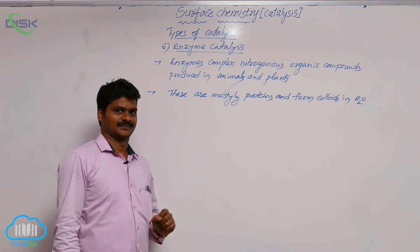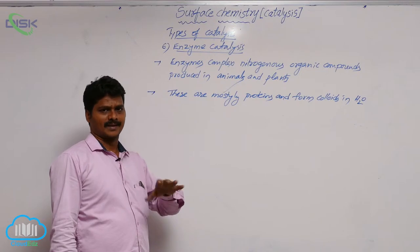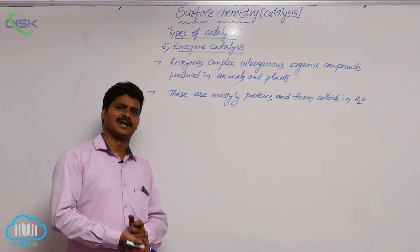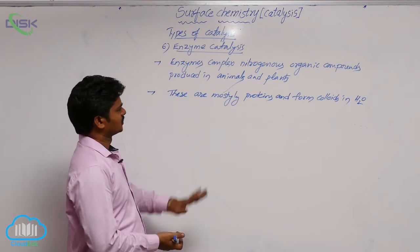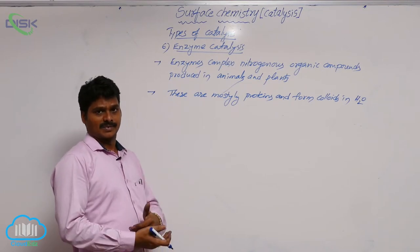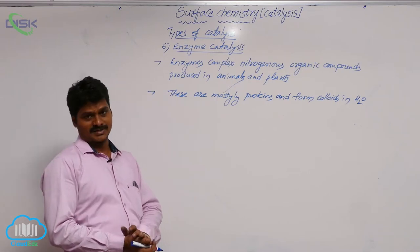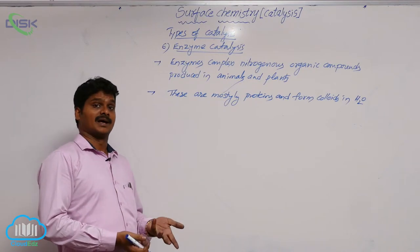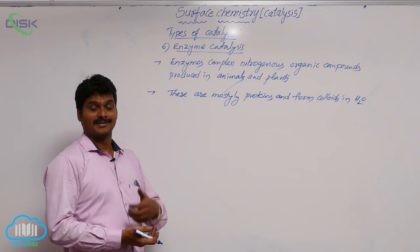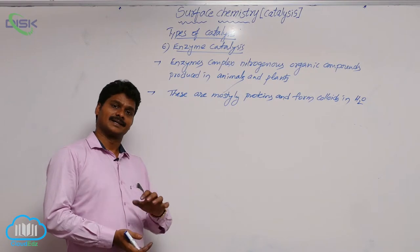Enzymes are mostly proteins — about 99% of enzymes are proteins, though some enzymes do not contain a protein part. Enzymes are naturally occurring, prepared in our body or in plants, though some enzymes are also made artificially. Enzymes can be crystallized from living cells.